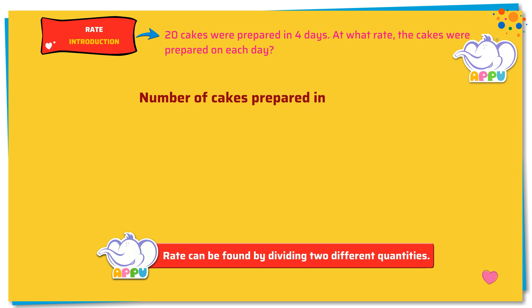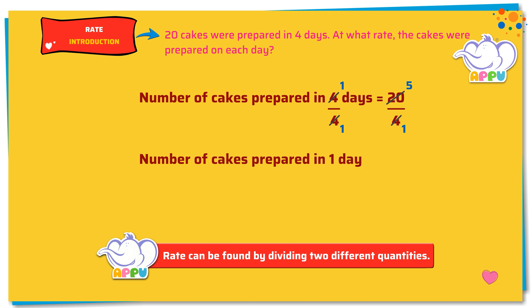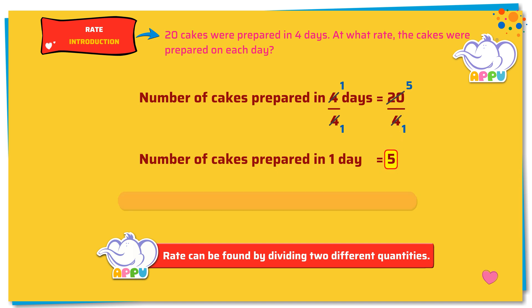Number of cakes prepared in 4 days equals 20. To find the number of cakes prepared in 1 day, we divide both sides by 4. So, the number of cakes prepared in 1 day is 20 divided by 4. We get 5 cakes per day. Cakes were prepared at a rate of 5 per day.